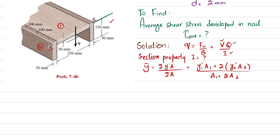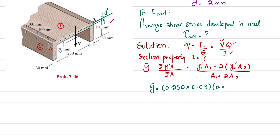Taking the upper surface as the reference line, section 1 has area A1 equal to 250 mm times 30 mm, which is 0.250 m times 0.03 m. The distance y1-dash is from the top surface to the mid of this first section, which is 30 divided by 2, equal to 15 millimeters, or 0.015 m.